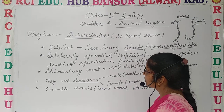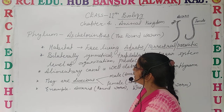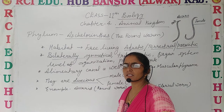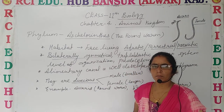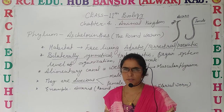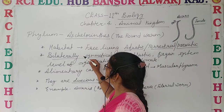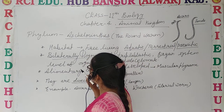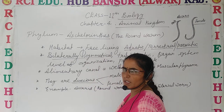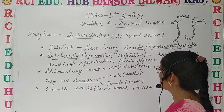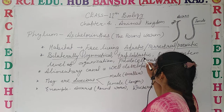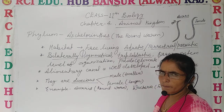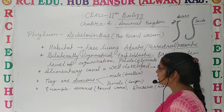Another common feature is that they are bilaterally symmetrical — we have already discussed this term. Bilaterally symmetrical means the body can be divided into two equal halves through a single plane.